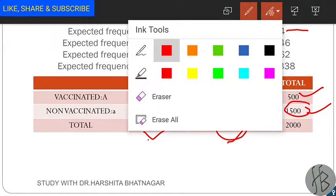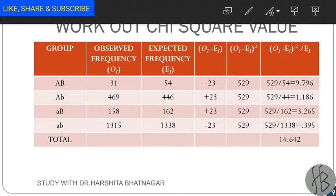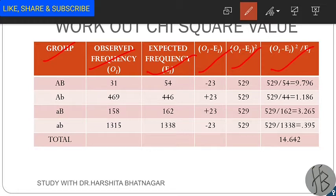Now put all these values in the table with 6 columns: group, observed frequencies, expected frequencies, O minus E, (O minus E) squared, and that squared value divided by expected frequency. The observed frequencies are 31, 469, 158, and 1315, and the expected frequencies are 54, 446, 162, and 1338. Find the differences, square them, divide by expected frequencies, and sum to get 14.642 — your chi-square value.